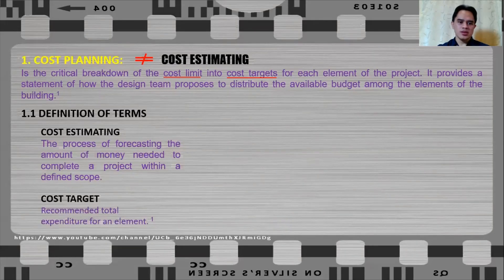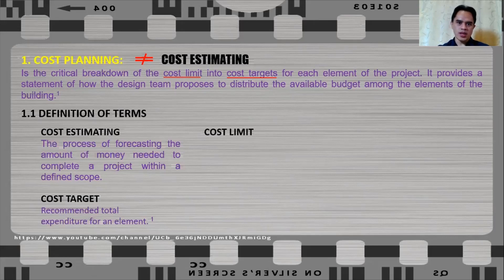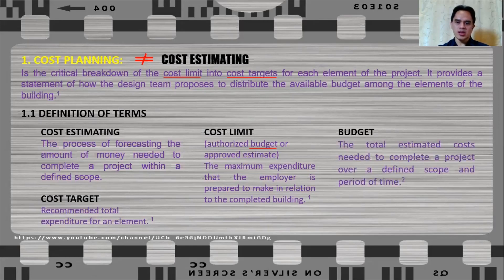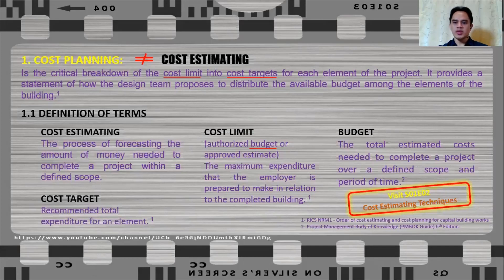Cost target is the recommended total expenditure for an element. While cost limit is the authorized budget or the approved cost estimate — it is the maximum expenditure that the employer is prepared to make in relation to the completed building. Budget is the total estimated cost needed to complete a project over a defined scope and period of time. If you want to know more about budget, you can visit my previous video, Season 1 Episode 2 of Quantification and Costing of Works, where I talk about cost estimating techniques.